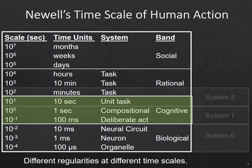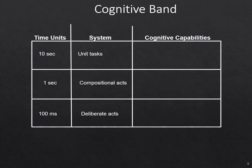Let's focus in now more on the cognitive band — between 100 milliseconds and about 10 seconds. The deliberative acts are things like primitive internal actions and accessing long-term memory. These are things you have no conscious access to, but are the components of any kind of reasonable rational thought.